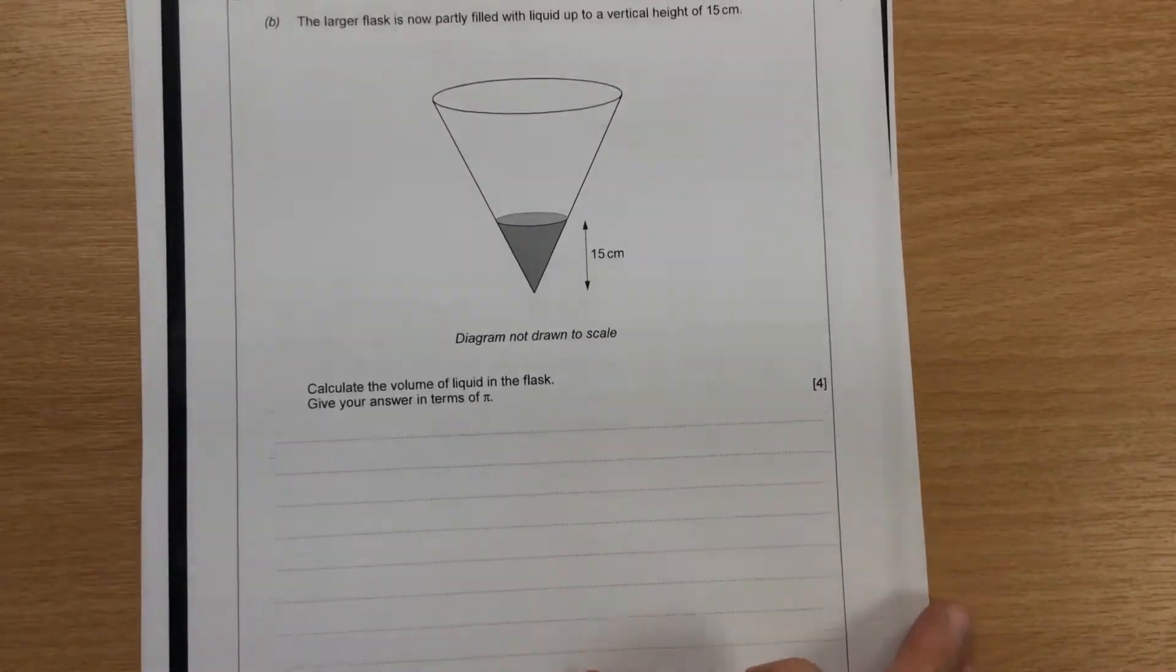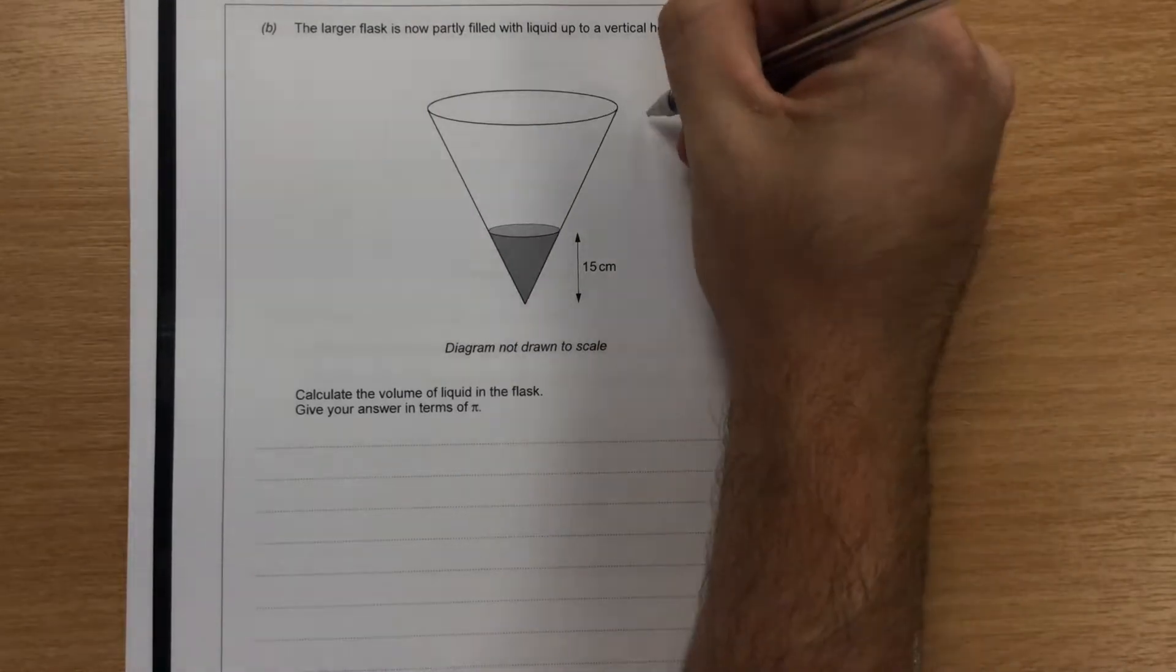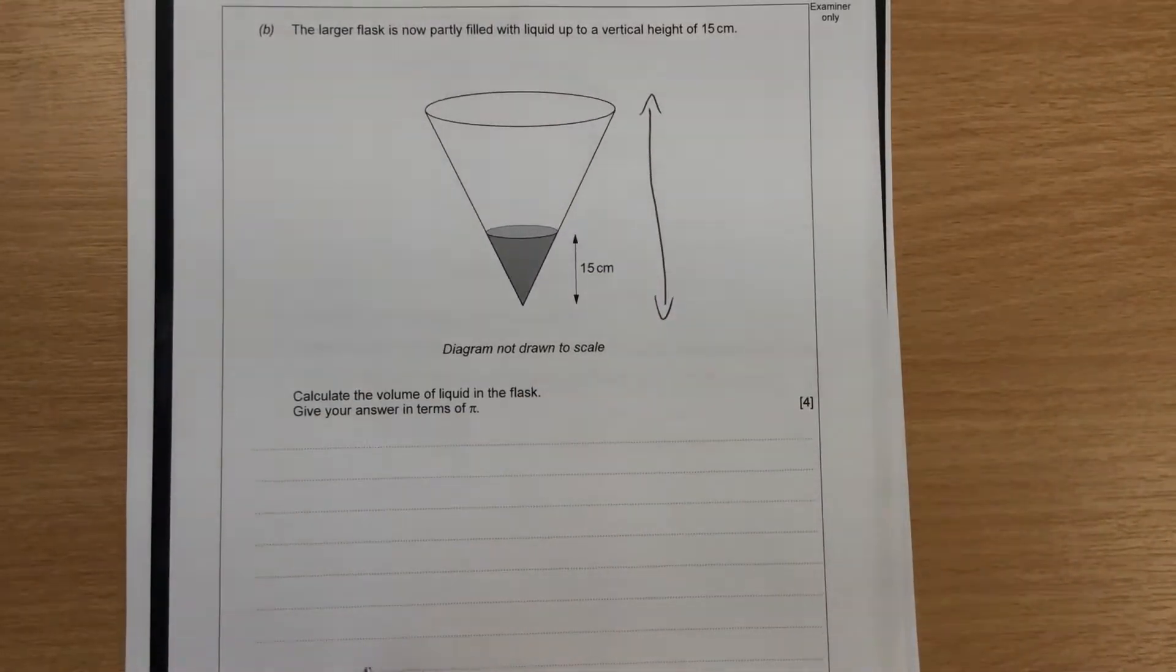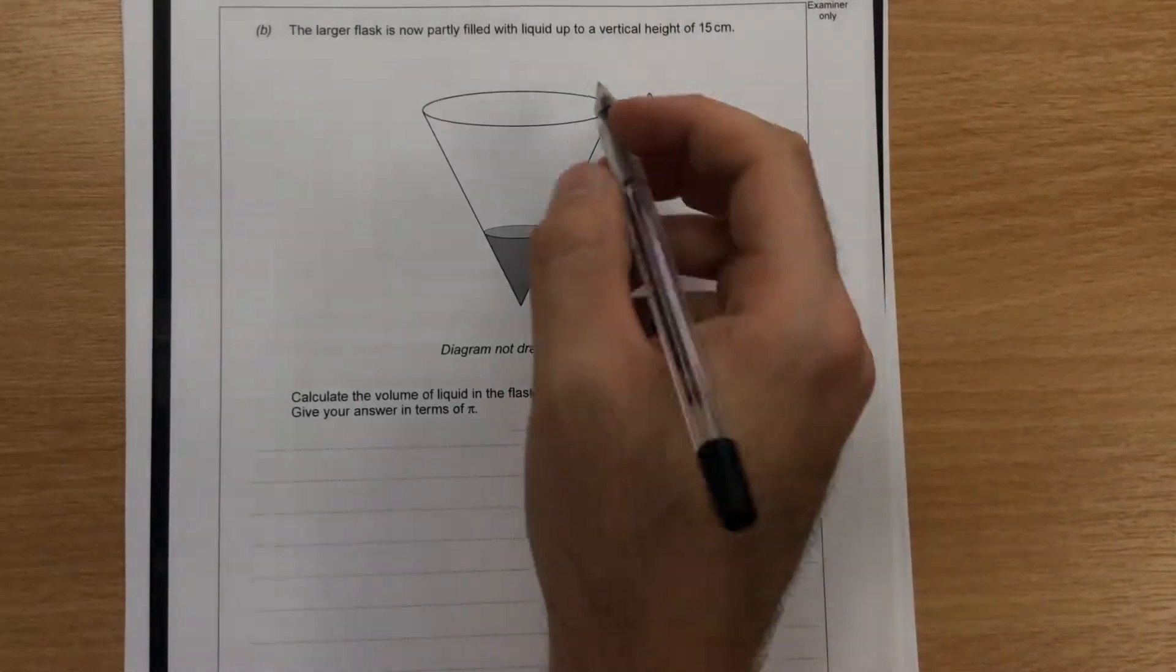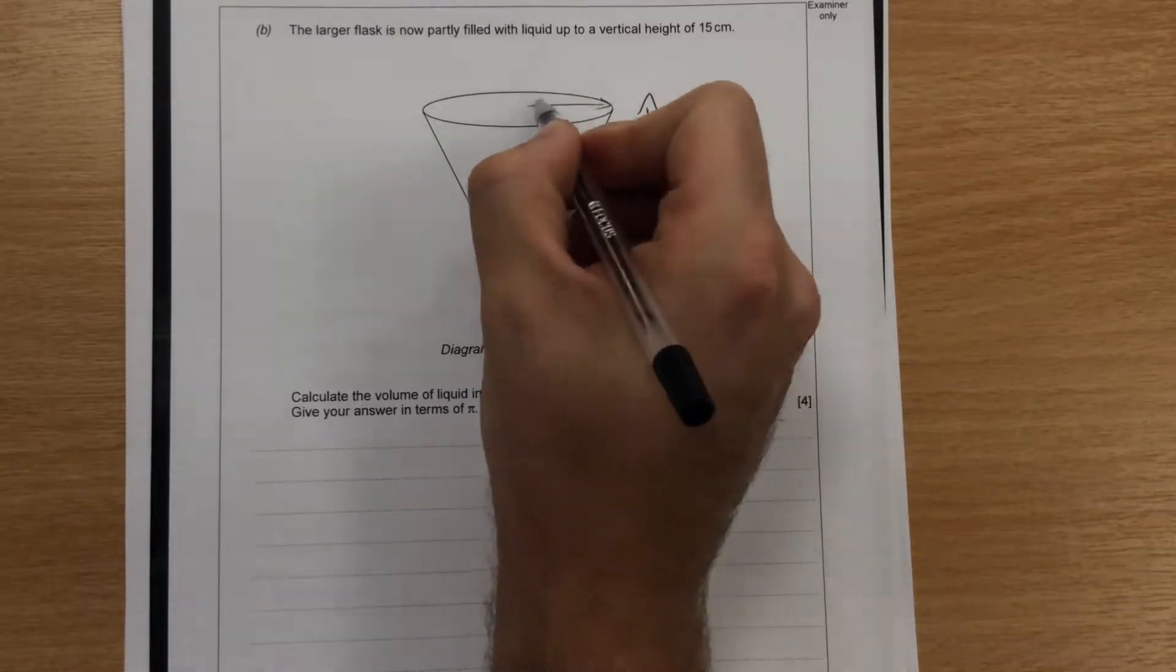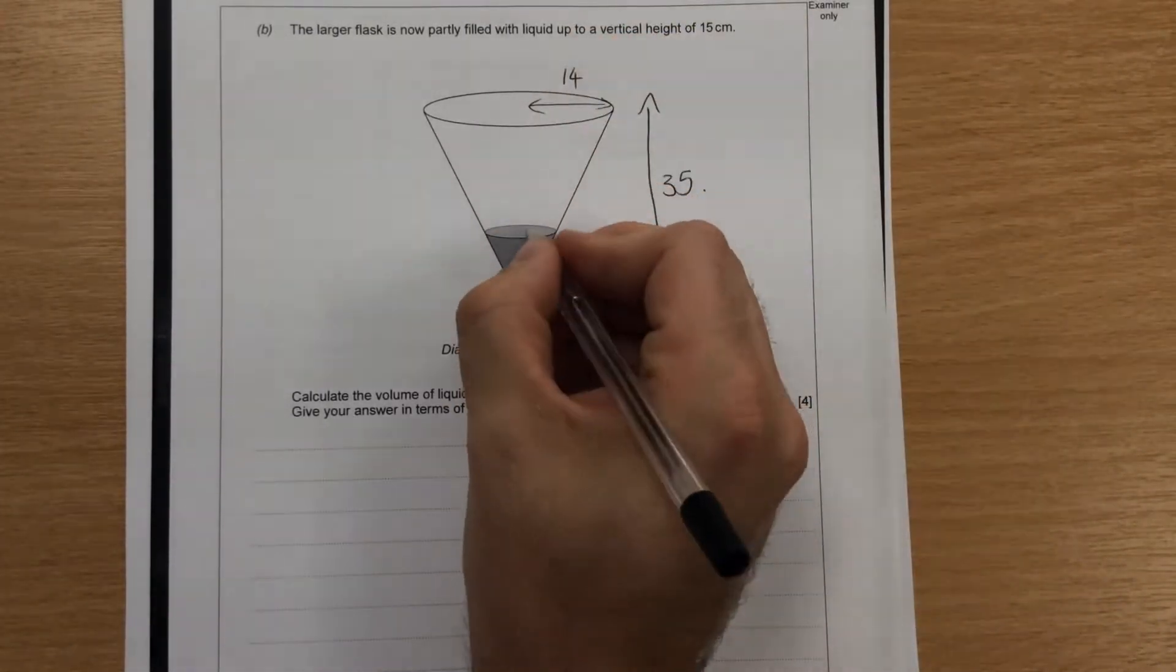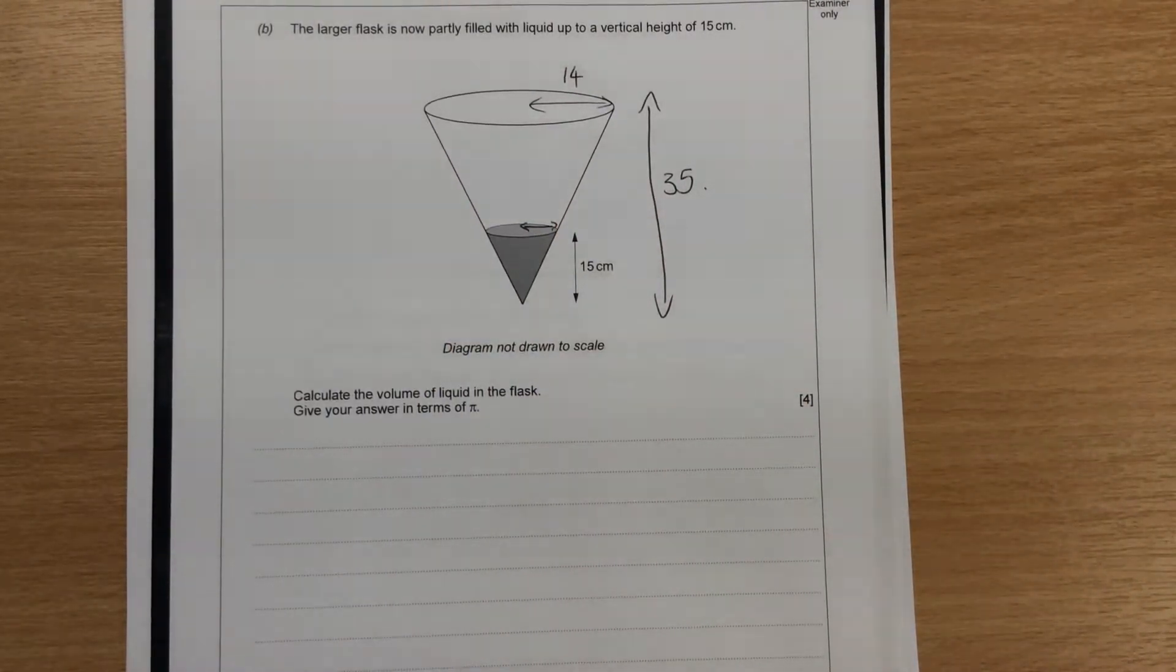Part B, the larger flask is now partly filled with liquid. Calculate the volume. So we know that the vertical height of the larger one that we worked out earlier was 35, and we know it's filling 15. We also know that the radius of the larger one is 14, and we need to find the radius of the part of the larger one. We can use a number of different ways to do this now.